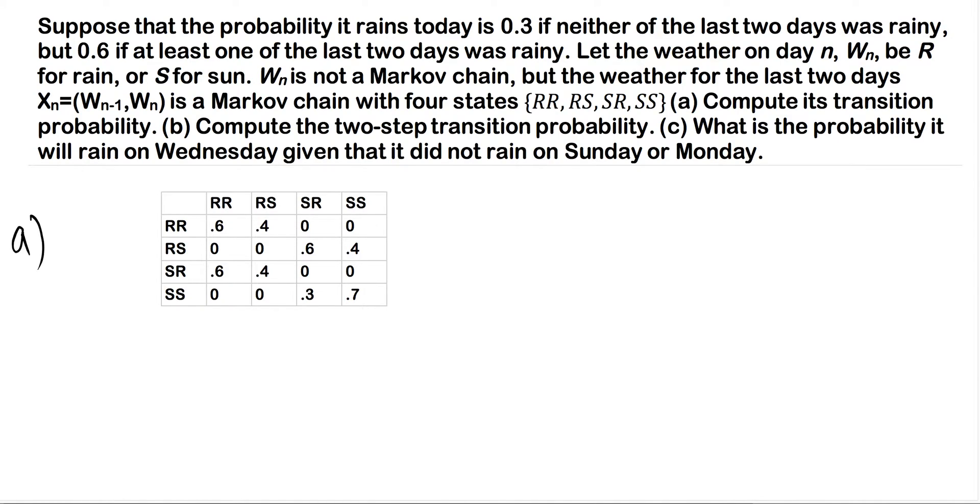be R for rain or S for sun. WN is not a Markov chain, but the weather for the last two days, XN equals (WN-1, WN), is a Markov chain with four states: RR, RS, SR, and SS,